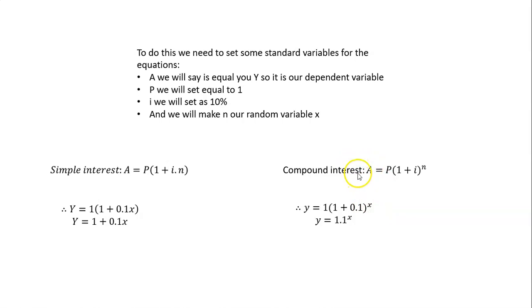For compound interest, you do the same thing. You set A = y. P = 1. The one stays the same. Plus 0.1, because i is also still 10% with the compound interest. And then you put the n, you switch with x. So now it's all to the power of x. Once again, we haven't actually changed what n is. n and x is still time. It doesn't matter that we've changed the symbol. It still represents time.